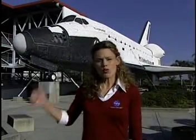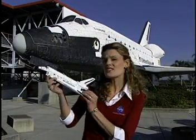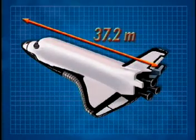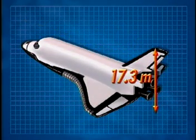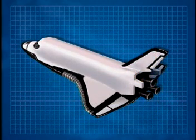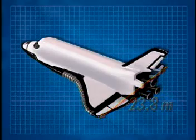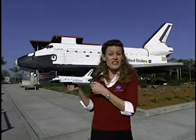Are you still having trouble trying to understand scaling? Let's look at another example, this time using a scale model. Right behind me is a replica of the space shuttle, and this right here is a scale model of the space shuttle. The actual space shuttle has a length of 37.2 meters, a height of 17.3 meters, and a width or wingspan of 23.8 meters. This shuttle model is a 1:100 scale of the actual space shuttle.